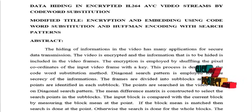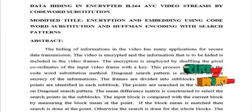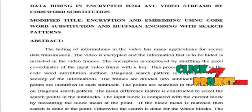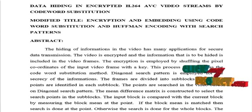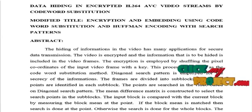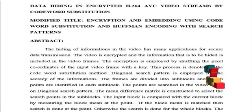Hiding of information in videos has many applications for secure data transmissions. The video is encrypted and the information to be hidden is included in the video frames. The encryption process is employed by shuffling the pixel coordinates of the input video frames based on a key. This process is denoted as the codeword substitution model. Diagonal search patterns were employed for the secrecy of the information.